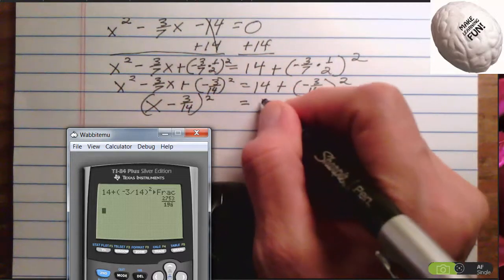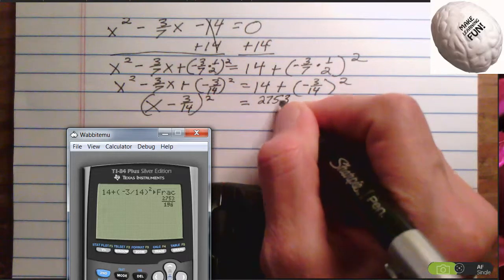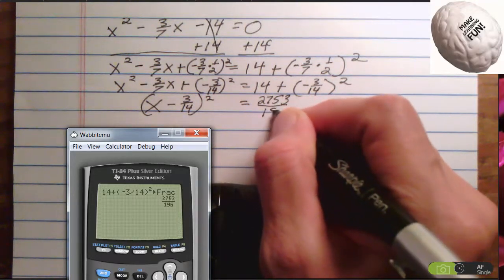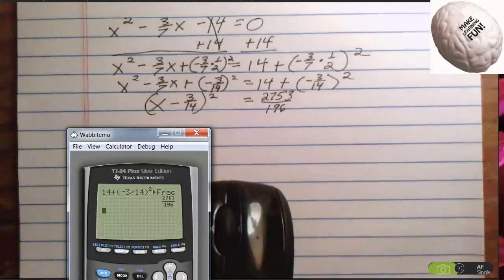2753. What have I done? 2753 over 196. Okay, but we are going to keep on keeping on.